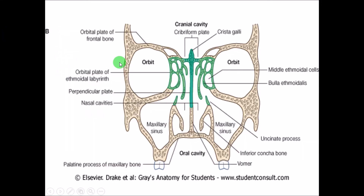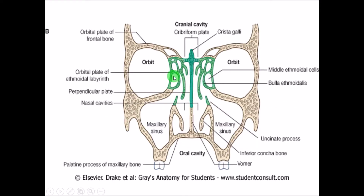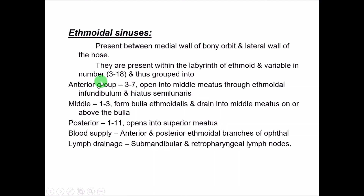The ethmoidal air sinuses are located beside the septum on the lateral wall, between the nasal cavity and the orbit. They are numerous and grouped into anterior, middle, and posterior groups. Blood supply is by the anterior and posterior ethmoidal branches, and lymphatic drainage is into the submandibular as well as the retropharyngeal group of lymph nodes. The anterior and middle groups open into the middle meatus, while the posterior group opens into the superior meatus.